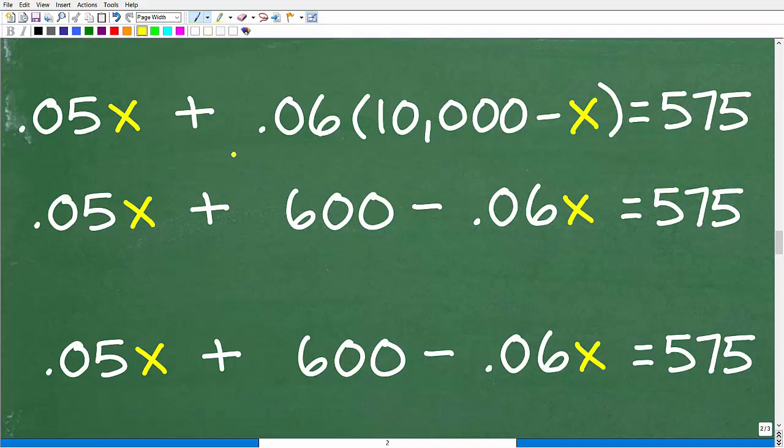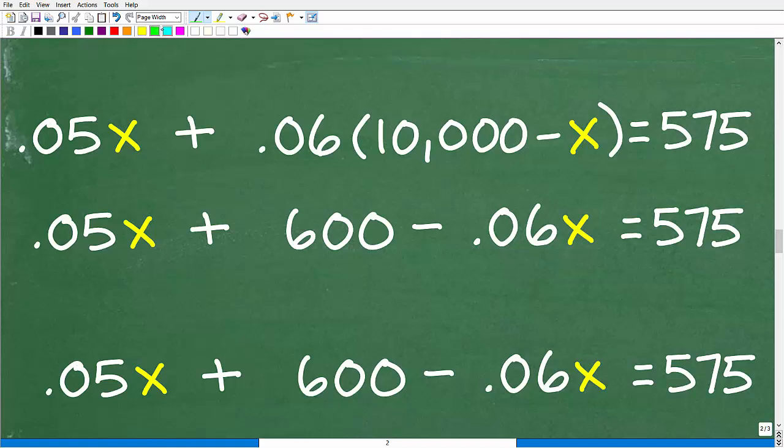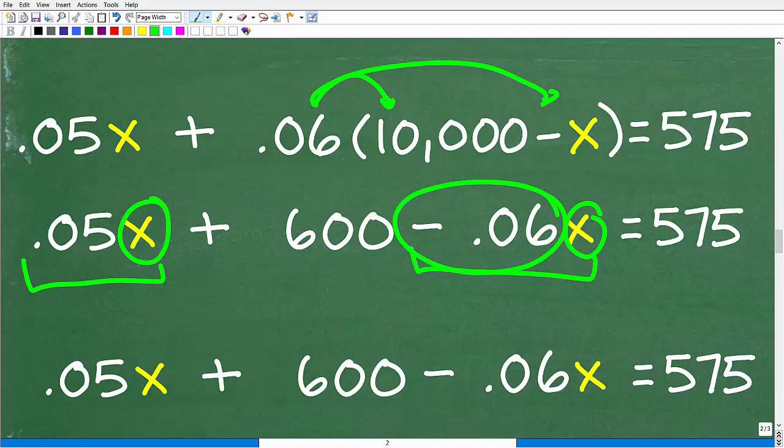So we have 0.05x plus 0.06 times 10,000 minus x is equal to 575. All right, so first things first. First, we need to use the distributive property right here. So we're going to take this 0.06 times 10,000. That gives us 600. And then 0.06 times this x is going to be 0.06x. Okay, so we have 0.05x plus 600 minus 0.06x. So the next thing we need to do is combine like terms. We have x here, x here. So we're going to add these coefficients. So 0.06, or sorry, 0.05 minus 0.06 gives us what?